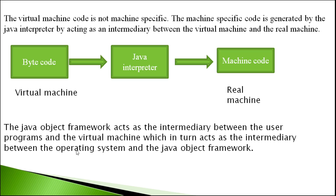The Java object framework acts as an intermediary between the user program and the virtual machine. The virtual machine is intermediate between the operating system and the Java object framework.